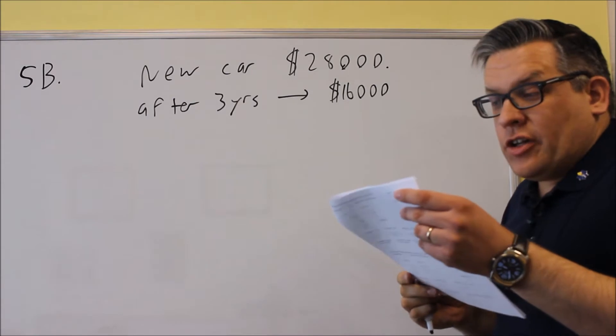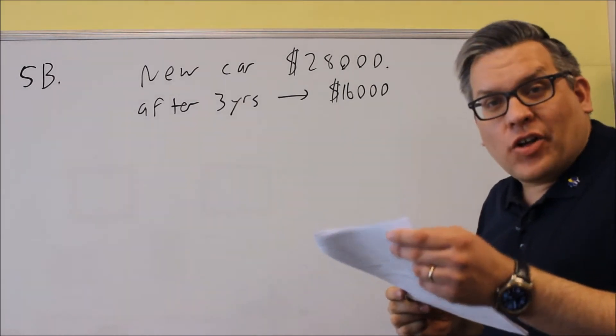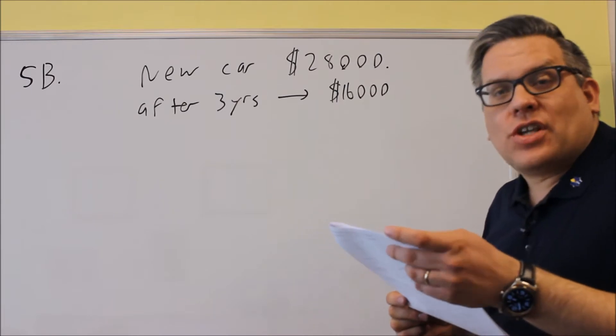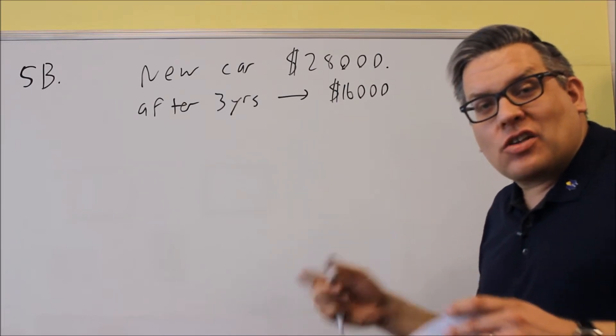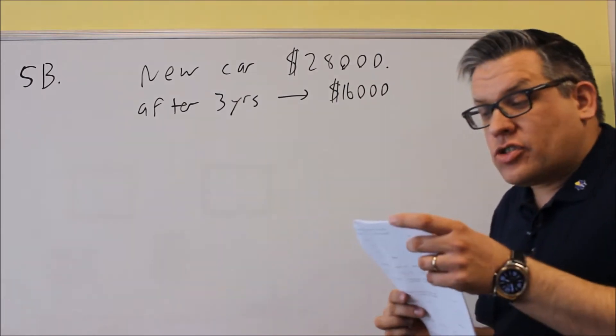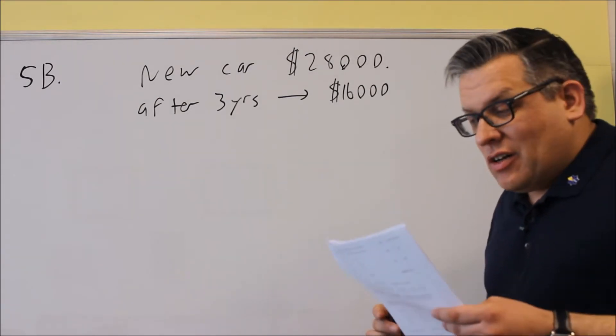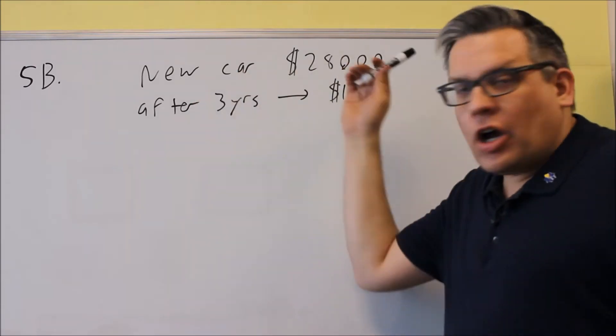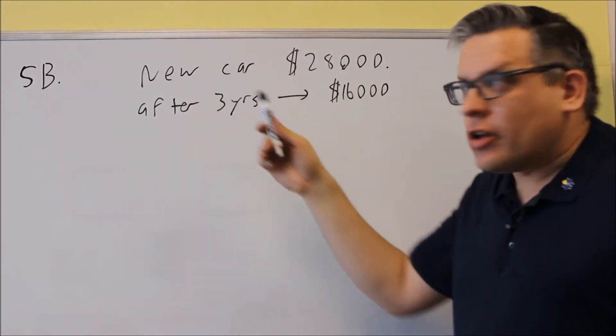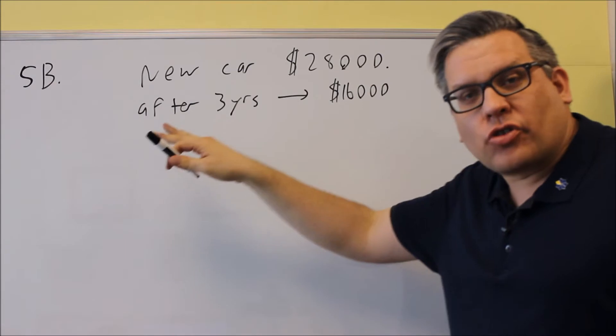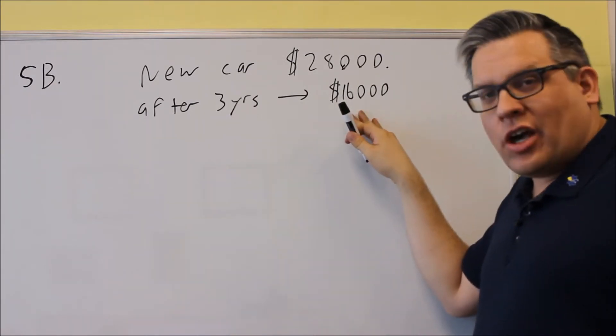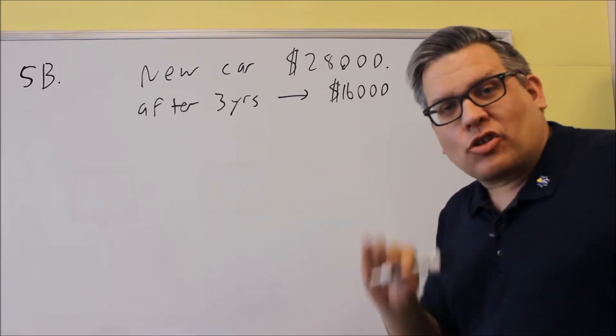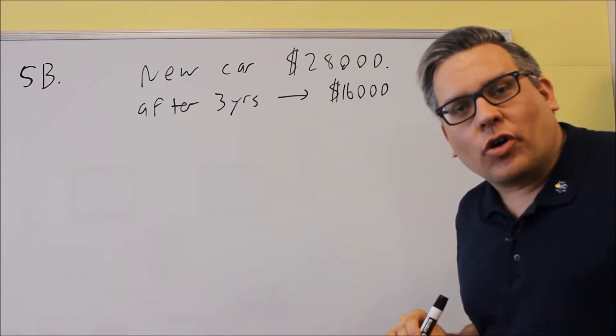Write a linear function that expresses the value V of the car as a function of its age T. V is like your Y value, and T is like an X value. For this kind of problem, when you have depreciation where a new car or machine starts at one price and after a certain number of years drops again, this is a depreciation problem that requires a different process to solve.